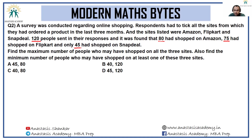The maximum number of people who could have shopped on all three sites has to be the lowest cardinal number present among the sets, so 45 is that portion. Given this, we can rule out options D and C. These 45 people are also people who shopped on Amazon and also on Flipkart. The next part asks for the minimum number of people who may have shopped on at least one of these three sites.